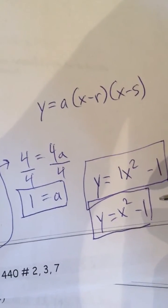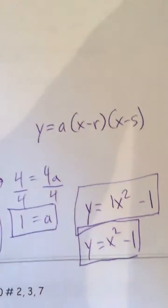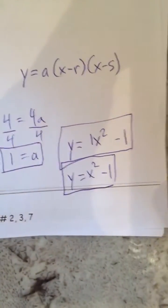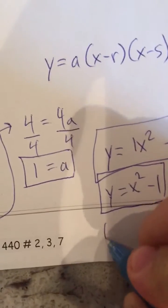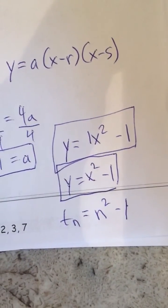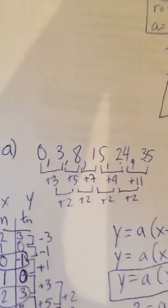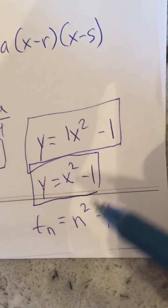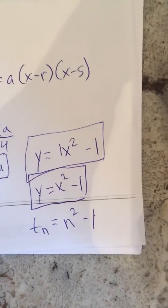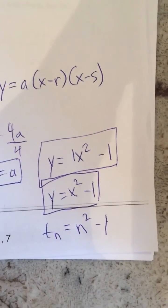Some may have found this formula by guess and check, but for more complex tables you'll need this method. Writing it properly in sequence notation: T(n) = n² − 1. To verify: term 4 gives 4² − 1 = 16 − 1 = 15. That checks out. This is how you derive the general term formula for a sequence that follows a parabolic pattern.